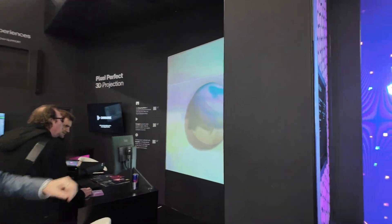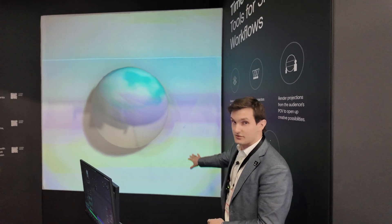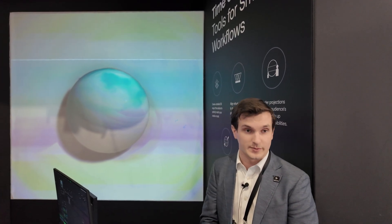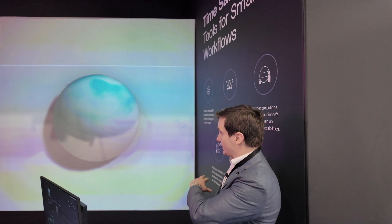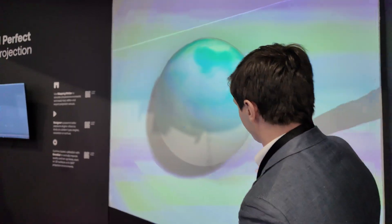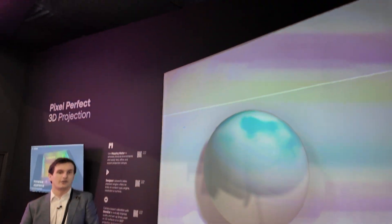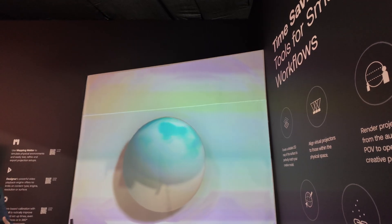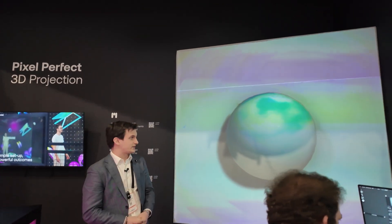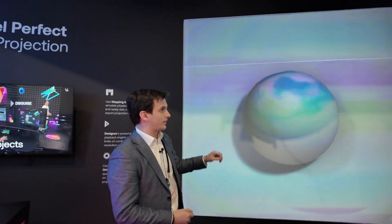Over here we have a demonstration of our OmniCal system. This is a projection and projection alignment system — we have a curved dome to demonstrate that we can project and do automated alignment through OmniCal on interesting shapes. We have a projector down here and a projector up there, and often with multiple projectors alignment is an issue. Our OmniCal system uses a variety of sensors to automate that alignment process, making it very easy and simple to use.